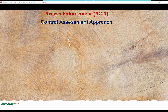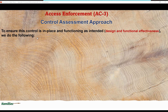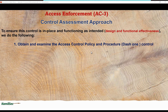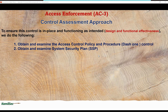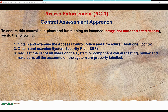Now let's look at the control assessment approach. If you are a security control assessor assigned to assess this control, to ensure the control is in place and functioning as intended — that is, design and functional effectiveness — you should: first, obtain and examine the access control policy and procedure; second, obtain and examine the System Security Plan (SSP) and compare it with the policy to identify any discrepancies; third, request the list of all users on the system or component you are testing and review to make sure all accounts are properly labeled.